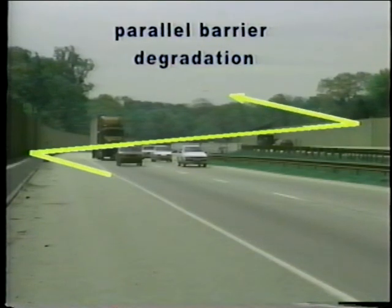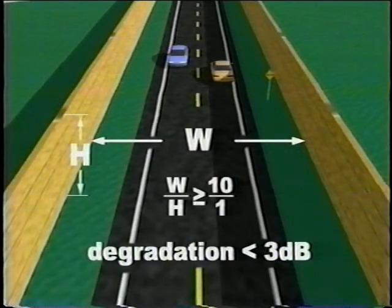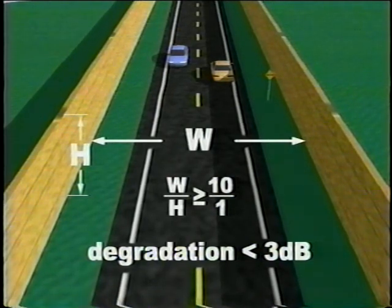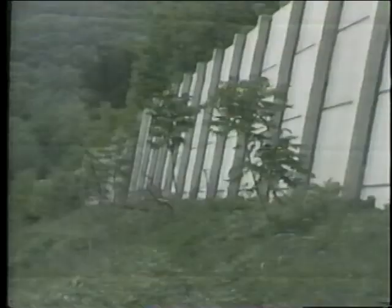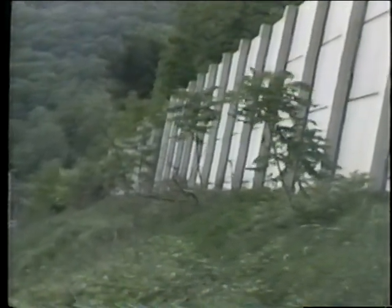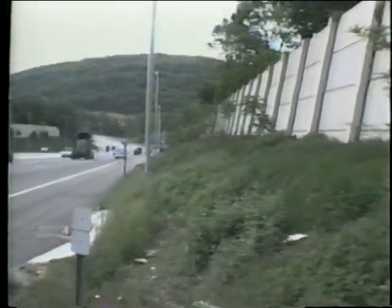The reduction in barrier effectiveness due to multiple reflections from parallel barriers or retaining walls is called parallel barrier degradation. Research has shown that as a general rule, if the ratio of roadway width to average height of the parallel barriers is 10 to 1 or greater, the parallel barrier degradation is less than 3 dB. Remember that decibel changes less than 3 are typically not perceivable. Solutions to parallel barrier degradation include applying absorbing material to the face of the barrier, and tilting the barrier out away from the highway. When tilting a barrier, one must consider tall structures on the opposite side of the highway so as not to adversely affect them with the reflected sound.